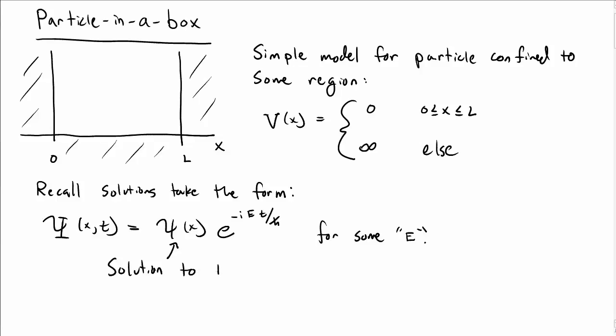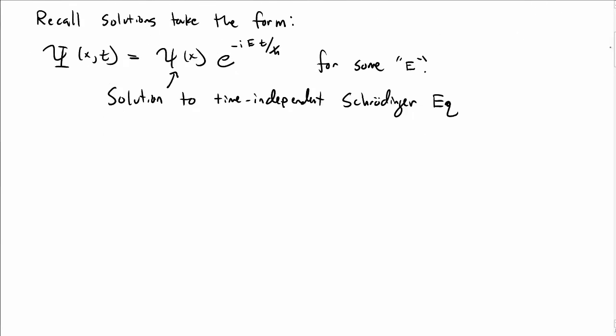The lowercase ψ is a solution to the time-independent Schrödinger equation, which looks like minus h-bar squared over 2m times the second derivative of ψ with respect to x, plus the potential times ψ, equals E times ψ.